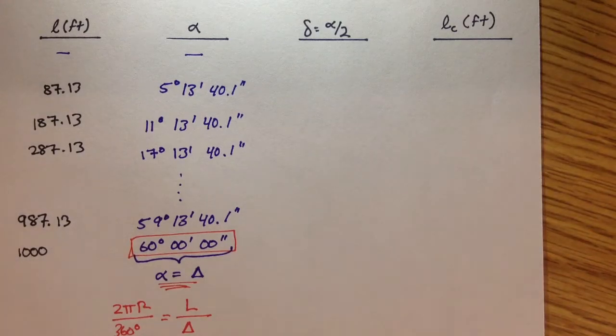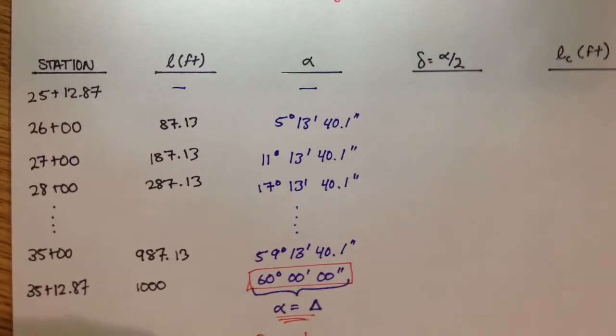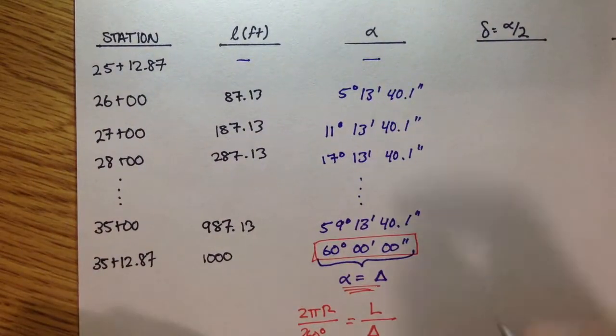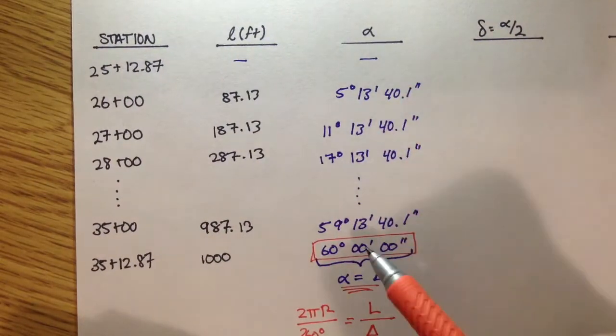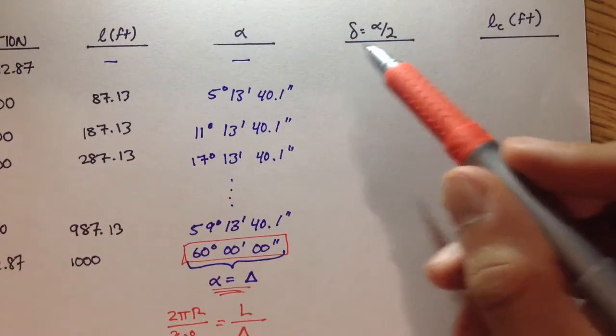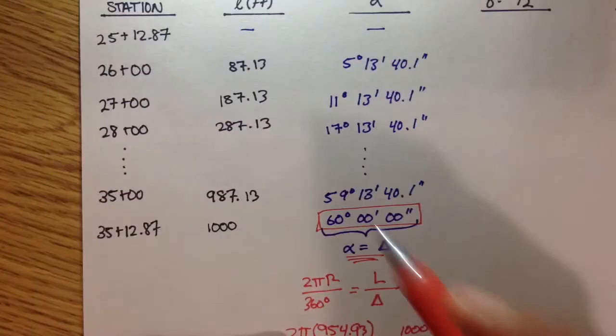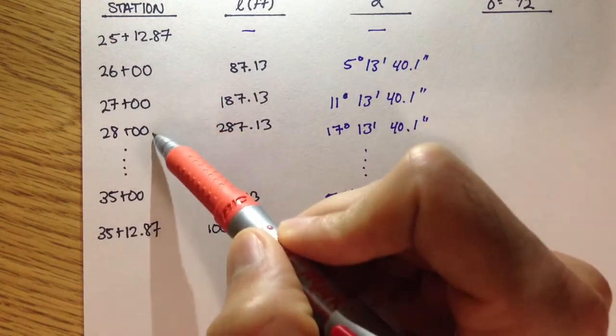Welcome back, we're just going to continue on with the example we were doing in the last video. In the last video, we figured out what little l is, what alpha is, and now we're going to figure out what the deflection angle is for each one of these points.